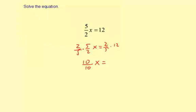Put this over 1: 2 times 12 is 24, and then divided by 5 times 1, which is 5. This 10 divided by 10 reduces to 1, so you're just going to have 1x equals 24 fifths.